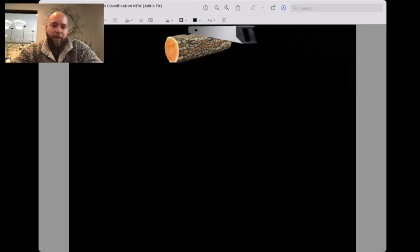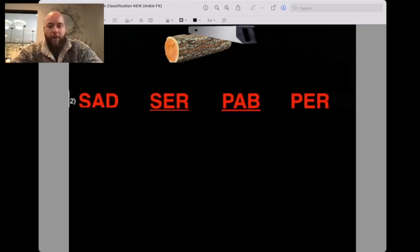So, the first step that you need to do is memorize this. In order, SAD, SER, PAB, PER, or, alternatively, some people memorize SAD, SEX, ABS, and PEX. A bit more memorable, but it's up to you. Just remember them in order.